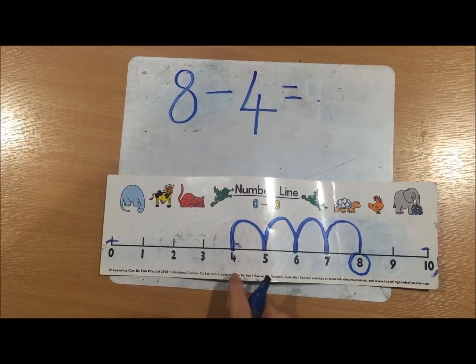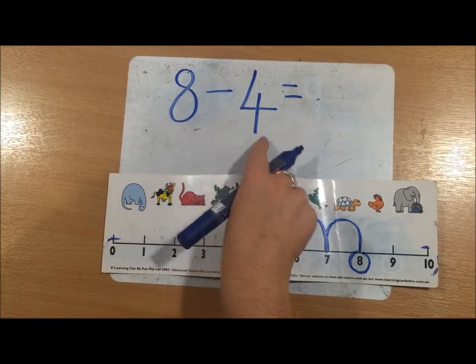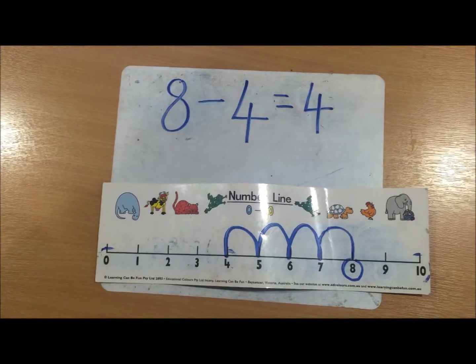The number which you land on is the answer. So 8 take away 4 equals 4. And that's how you subtract.